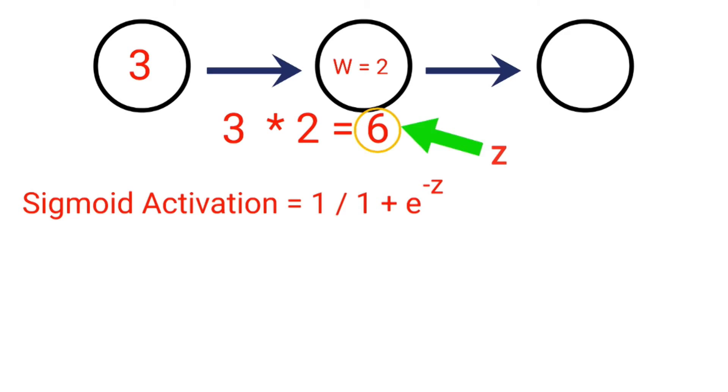We're going to be using the sigmoid activation for this example, and there's the equation, 1 divided by 1 plus the exponent of negative z. Now, z is the result of multiplying our input times our weight. You will commonly see that result called z. In this example, it's 6. So we would pass 6, or z, to our sigmoid activation function, and that gives us a final result, or output, of 0.998.